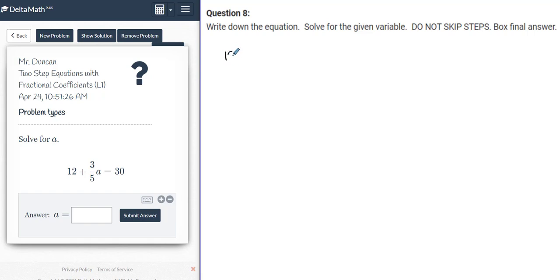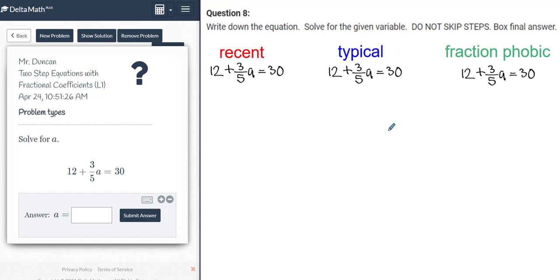Let's start with the equation. We have 12 plus 3 over 5a equals 30. And what I'm going to do is copy and paste this, and I'm going to work it out three different ways, and you can choose the way that seems to make the most sense for you. Hopefully you find it helpful. If not, the first way I show you is going to be the way I showed you earlier this week in class. So I wrote the equation three times, and I'm going to call this the recent way I taught you. The typical way I'll show you in blue, and then in green, this is what I call fraction-phobic. Phobic meaning having a fear or a fear of fractions.